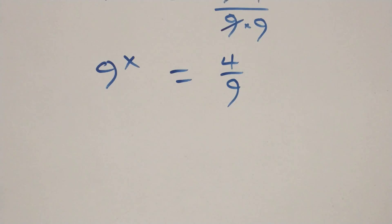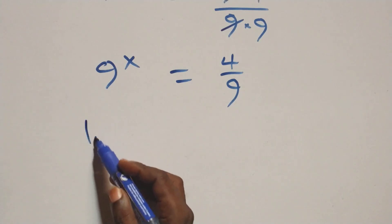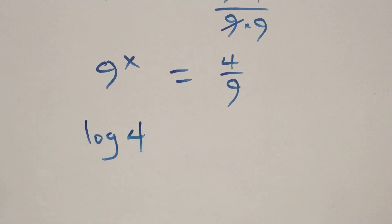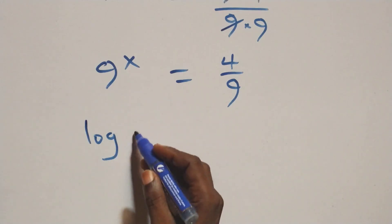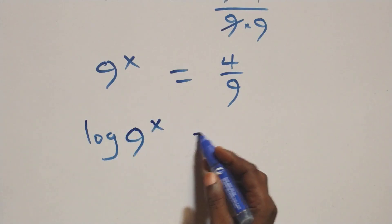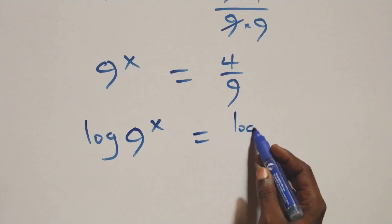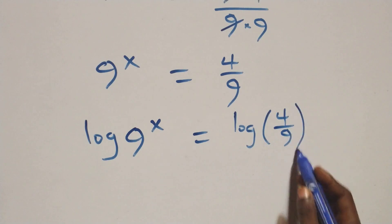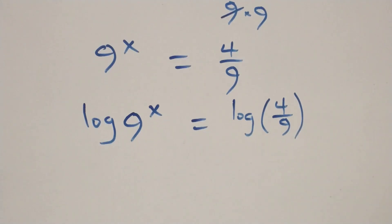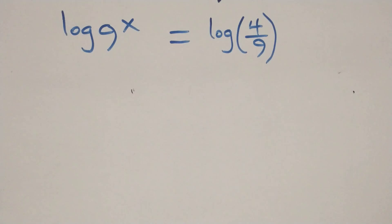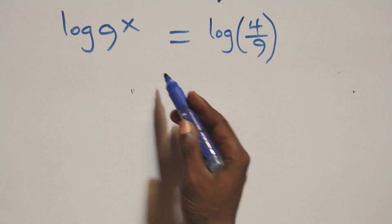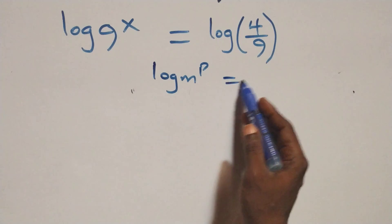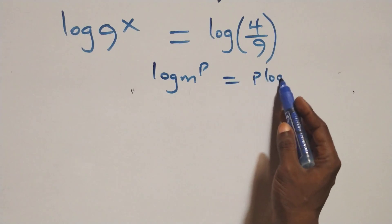From here, we have 9 raised to power x equals log(4/9). We apply the power of logarithm: when we have log m raised to power p, it is the same thing as p times log m.